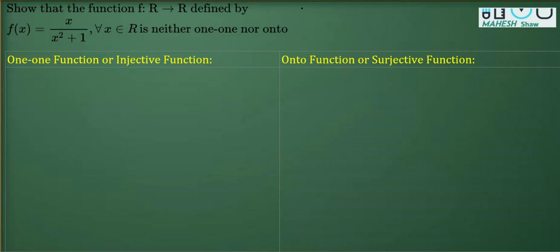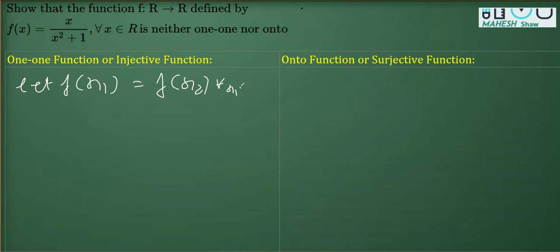For proving one-one, what we are going to do is take: let f(x₁) = f(x₂) for x₁, x₂ belonging to ℝ. Now if I replace with x₁, f(x₁) will come out as x₁/(x₁²+1).